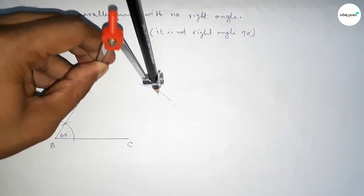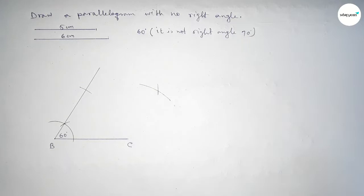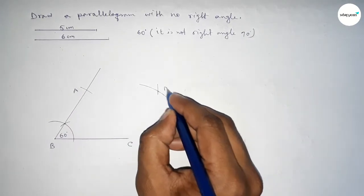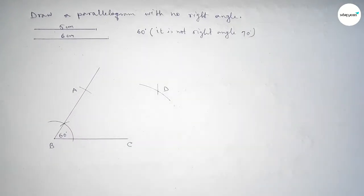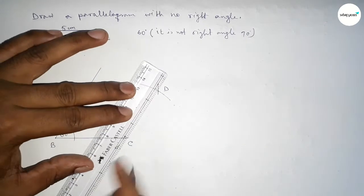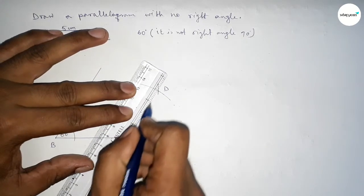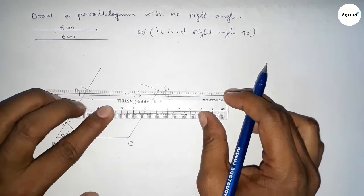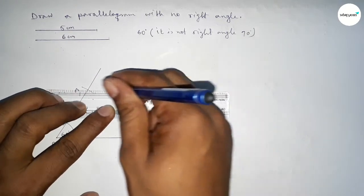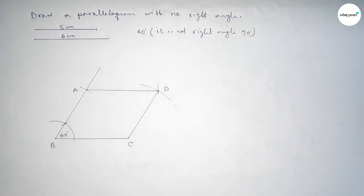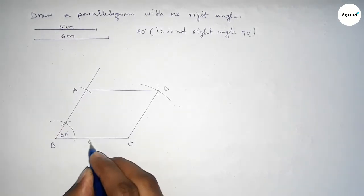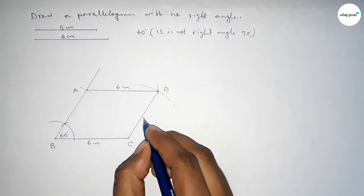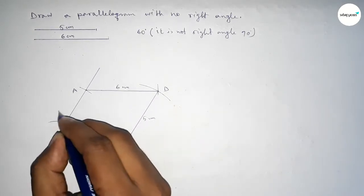Putting the compass here and cutting here, taking point A and point D. First joining C and D, then joining A and D to get parallelogram ABCD. This side is 6 centimeters, this side is 6 centimeters, this side is 5 centimeters, and this side is 5 centimeters.